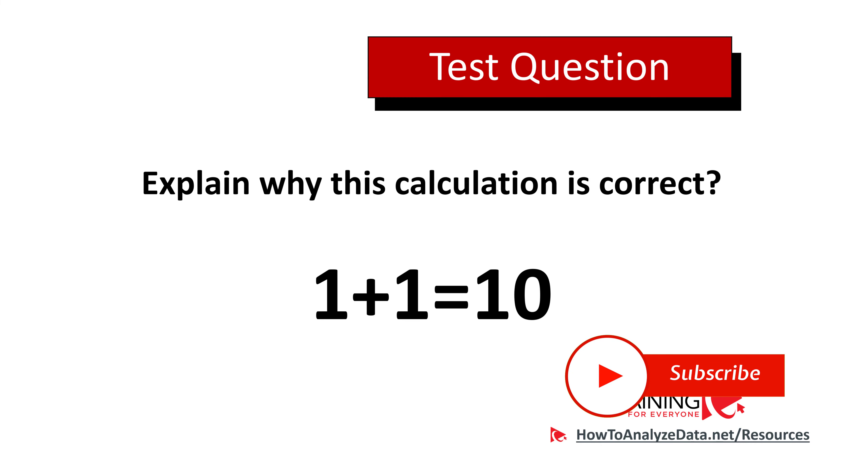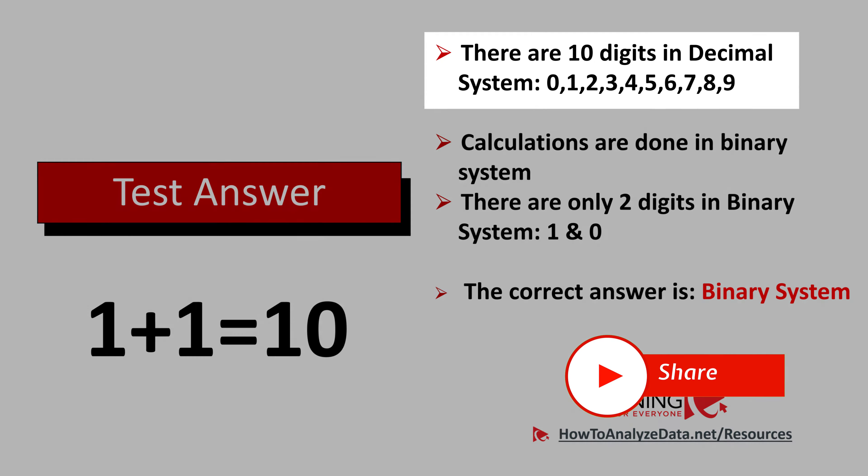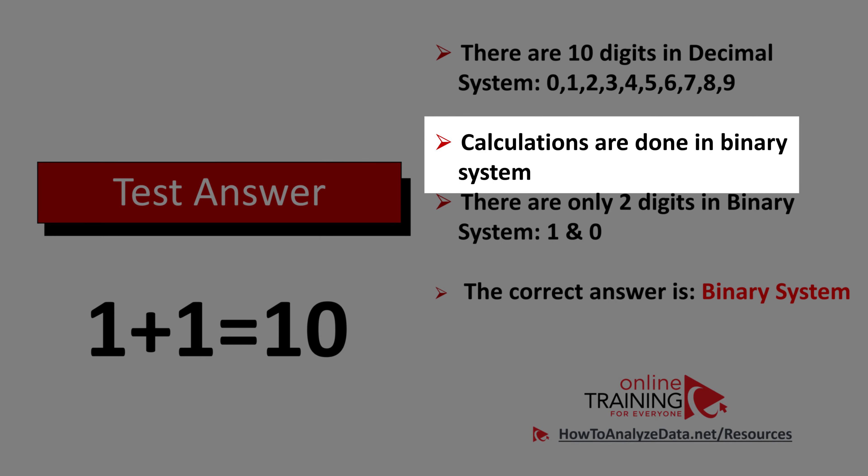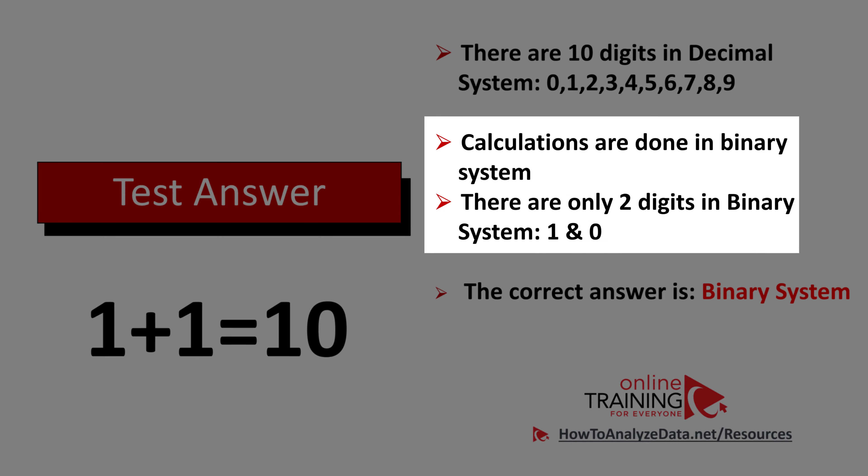Typically when we do calculations we use 10 digits in the decimal system: 0 through 9. But here the calculations are done in the binary system, which has only two digits: 1 and 0. In the binary system, when you add 1 plus 1, what looks like 10 in the decimal system is actually 2. So the correct answer is: this calculation is possible because of the binary system.